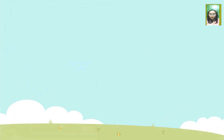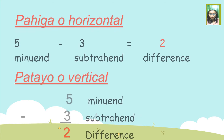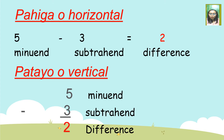Sa subtraction naman, ito ay binubuo ng minuend o mga numbers o numero na binabawasan, subtrahend — ito ay mga numero o numbers na ibabawas, at difference — ito ay mga numero o numbers na natira. Katulad ng adisyon, ang subtraction ay maaaring sagutan ng pahiga or horizontal at patayo or vertical.